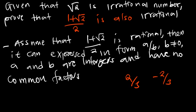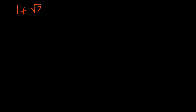So we prove by contradiction. We are assuming that 1 plus root 2 over 2 is rational, then it can be expressed in the form of A over B where B is not equal to 0, and A and B are integers and have no common factors. Since we have assumed this is a rational number, we are going to equate it equal to A over B.